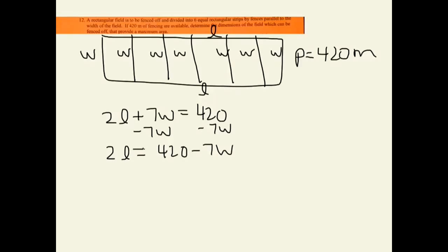So subtract 7W from both sides, and I get 420 take away 7W. Then I'm going to divide both sides, or every term rather, by 2. So I end up with length is equal to 210 take away 3.5W.